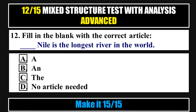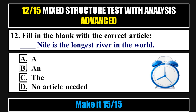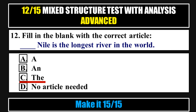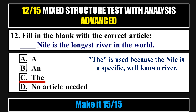Question 12. Fill in the blank with the correct article: '___ Nile is the longest river in the world.' Options: a. A, b. An, c. The, d. No article needed. Answer: The. 'The' is used because the Nile is a specific, well-known river.